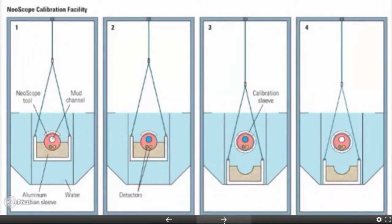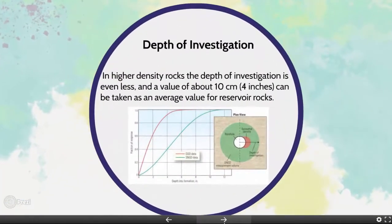The direct relationship between electron number density and bulk density indicates that no calibration is necessary. The depth of investigation of the tool is very shallow, making it sensitive to borehole quality. It is therefore necessary to interpret the formation density log together with the caliper log to ensure that measured values are not artifacts of bad hole quality.